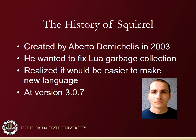Alberto kept a lot of similarities from Lua but made the new language resemble C, which had an easier syntax to follow. He also made garbage collection more predictable so it could be planned and not happen at the worst times. In 2003, Alberto released his first version of Squirrel. As of now, Squirrel is up to version 3.07 and is available under the MIT license, with an upcoming release of version 3.1.